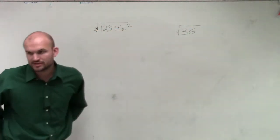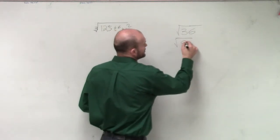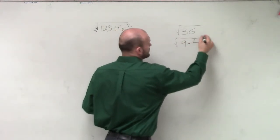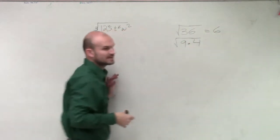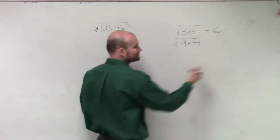So we have the square root of 36. I can rewrite that as square root of 9 times 4. We know the square root of 36 equals 6, and the square root of 9 times 4, is that still going to equal 6? Yes.